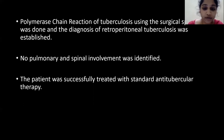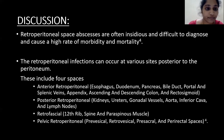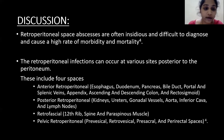There was no pulmonary or spinal involvement, and the patient was successfully treated with standard antitubercular therapy. Discussion. Retroperitoneal abscesses are often serious and difficult to diagnose, and cause a high rate of morbidity and mortality. Retroperitoneal infections can occur at various sites posterior to the peritoneum, which include four spaces.